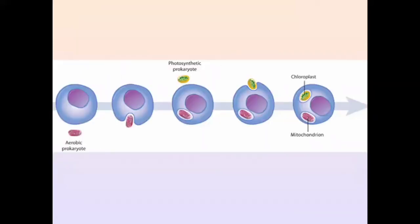An example is mitochondria and chloroplasts. Mitochondria evolved from aerobic prokaryotes — before it was an aerobic prokaryote, and then with the passage of time and changes in the environment it became the mitochondria. Similarly, chloroplasts evolved from photosynthetic prokaryotes, and over multiple generations and due to changes in the external environment, they adapted into chloroplasts.